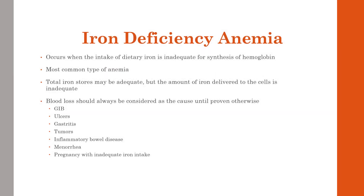Iron deficiency anemia occurs when the intake of dietary iron is inadequate for hemoglobin synthesis. Our bodies can store about a quarter to a third of our iron requirements, and it's not until those stores are depleted that iron deficiency anemia develops. This is the most common type of anemia in all age groups and worldwide, affecting as many as one in eight people, and is especially prevalent in developing countries with chronic lack of iron sources and blood loss through intestinal parasites.